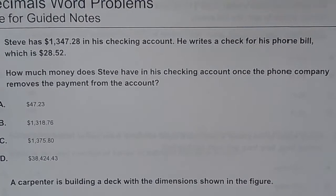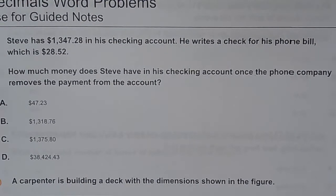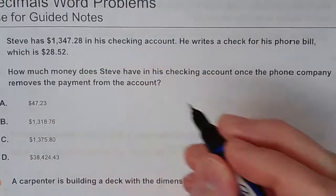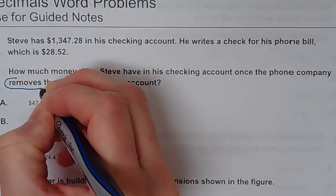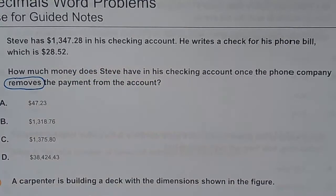Steve has $1,347.28 in his checking account. He writes a check for his phone bill which is $28.52. How much money does Steve have in his checking account once the phone company removes the payment from the account? Obviously the key word here is removes. If you're removing money from your account, you're losing it, so this is a subtraction problem.